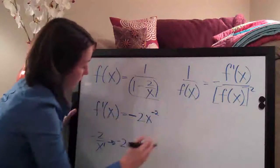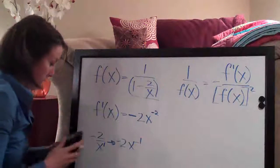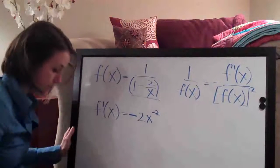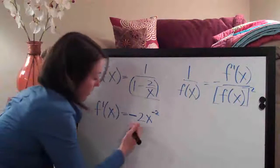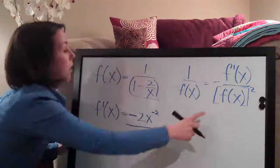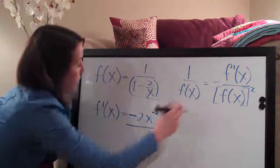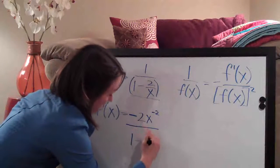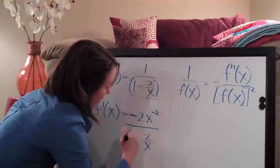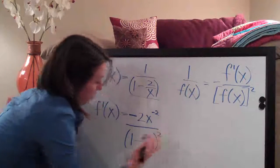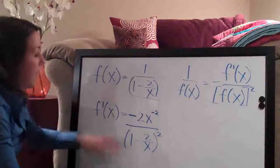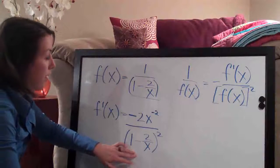So now all we need to do is deal with the denominator. Deal with the denominator so it's just simply the function squared. So we're going to go ahead and write 1 minus 2 over x and of course we have to square it. And that could be your final answer.